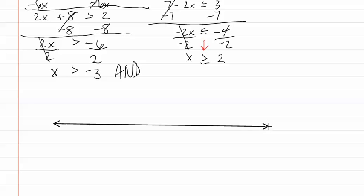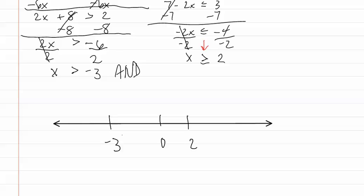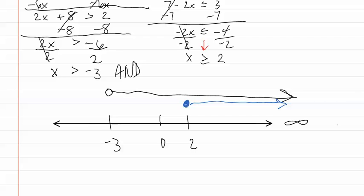Let's graph this. Let's start by placing our numbers on the line. We have x is greater than negative three, which means an open dot at negative three going towards positive infinity. Next, we have x is greater than or equal to two, which means a closed dot at two also going towards positive infinity. The overlapping portion is where the shorter line is, or from two to positive infinity. We can now write our interval notation by putting a bracket for the closed dot: two comma infinity parenthesis. This is our answer.